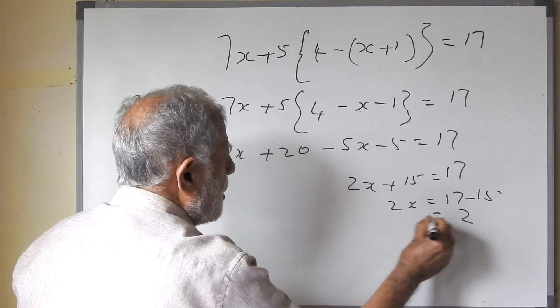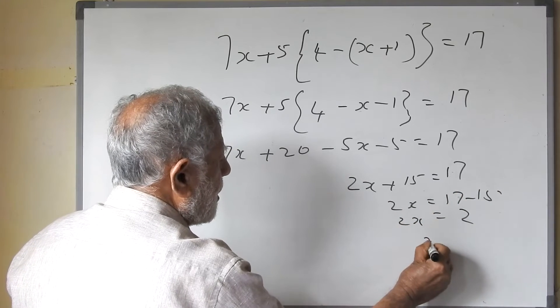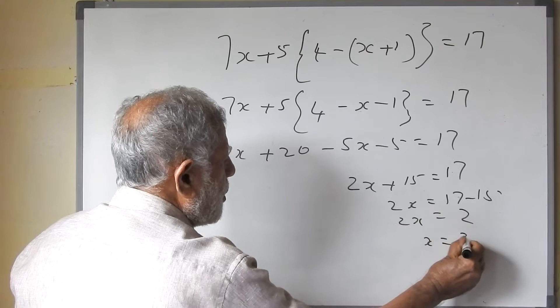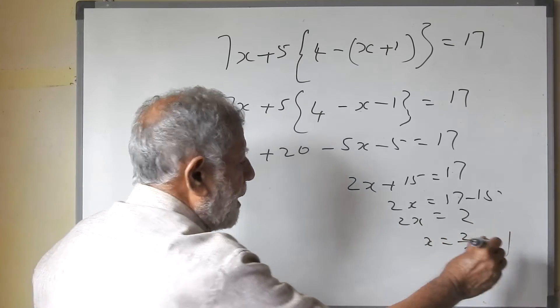Plus 15 equals 17. So 2x equals 17 minus 15, that is equal to 2. So x is equal to 2 upon 2, that is equal to 1.